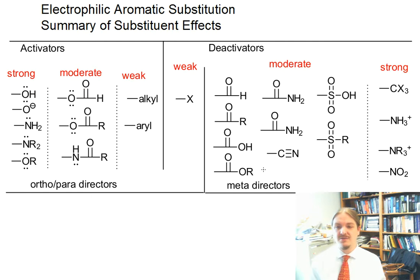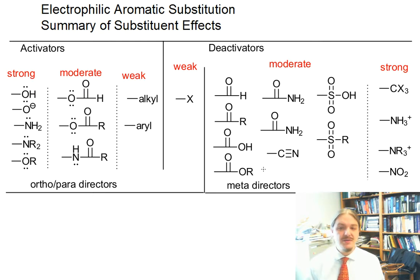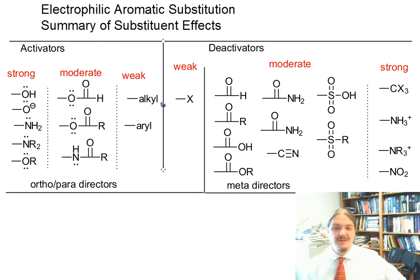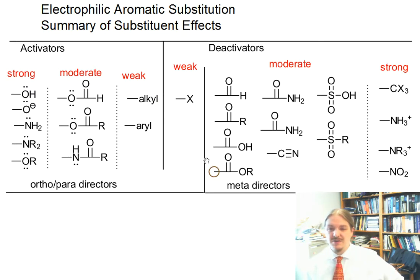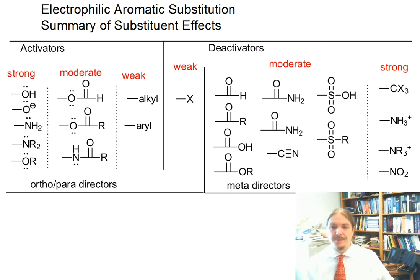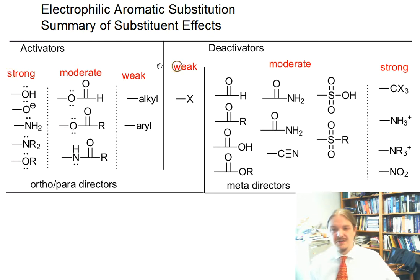On the screen I've got a table with activators on the left and deactivators on the right. The table is also divided by ortho-para directors and meta-directors, with one vertical line separating activators from deactivators, and another separating ortho-para directors from meta-directors. The halogens sit in the middle, and the activator and deactivator categories are each broken up into strong, moderate, and weak.